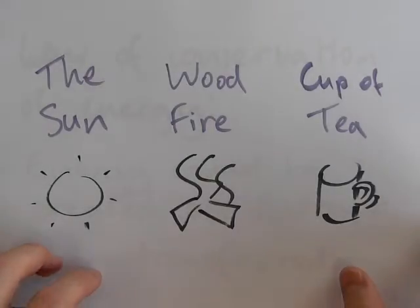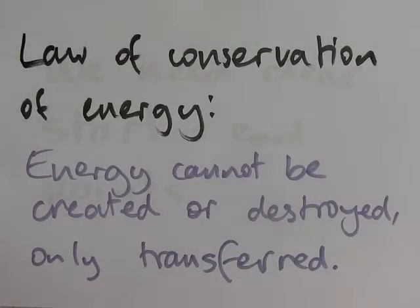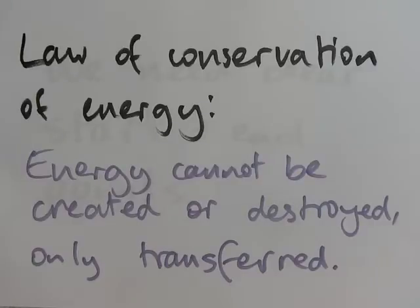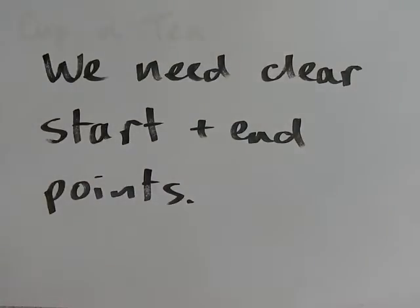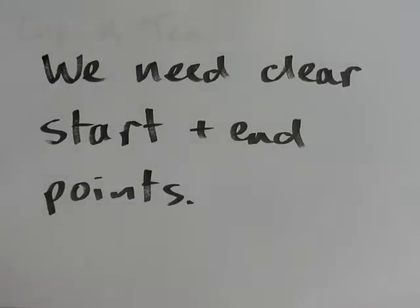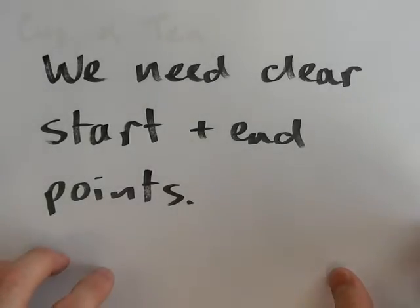I'm actually going to do them in the opposite order. The whole time we want to be thinking about the law of conservation of energy, which says that energy cannot be created or destroyed, only transferred. So in each of these examples we should be able to account for all the energy — no energy should disappear and no energy should appear out of nowhere. Also, for any energy transfers analysis we need clear start and end points, so we know exactly what the starting and ending conditions are.